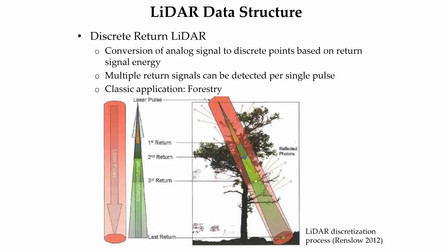In LiDAR remote sensing, a pulse is emitted from a LiDAR sensor and a return signal is detected. Since the emergence of LiDAR as an active remote sensing technology over two decades ago, the main method for detecting a return signal has been converting the analog signal into discrete return points by measuring the energy of the return signal. As LiDAR sensors have improved, their ability to detect multiple returns per transmitted pulse has increased. The classic example of the utility of multiple return LiDAR is the detection of various tree canopy layers from a single airborne LiDAR system pulse.